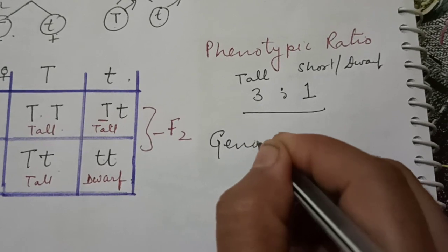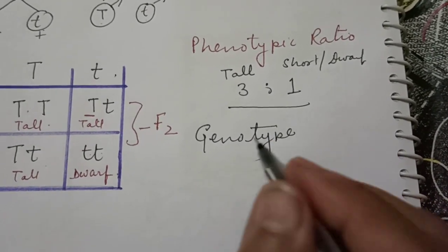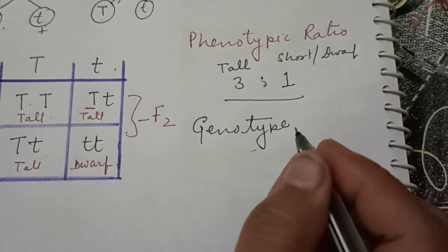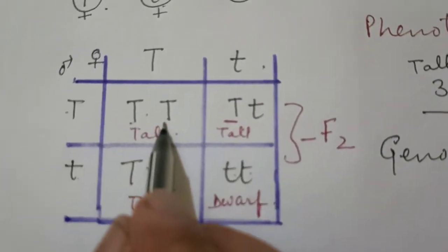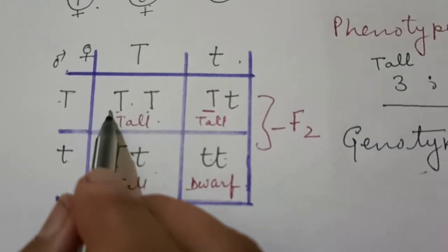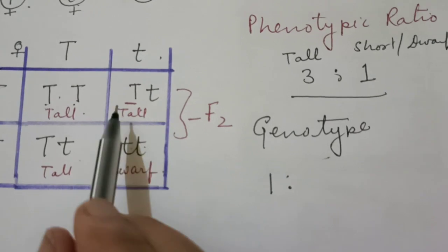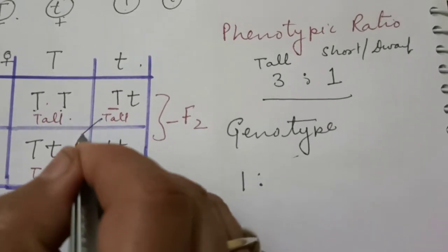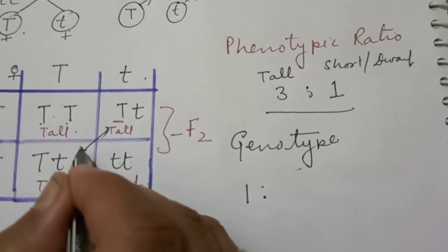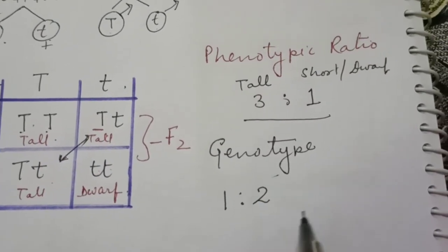Now come on the genotype. Genotype means the genotypic gene pattern. What type of gene pattern is there in these plants? So you can observe capital T capital T, this is only one type of gene pattern, so we will write as one. Capital T small t and capital T small t, these are two plants having the same type of genotype, that is gene pattern, so we will write it as two.